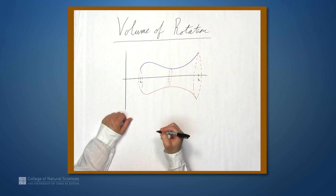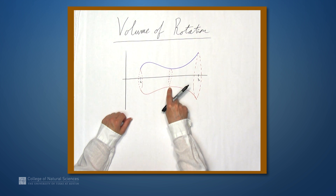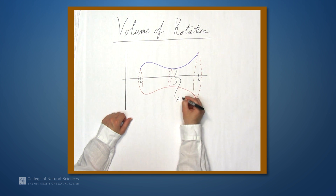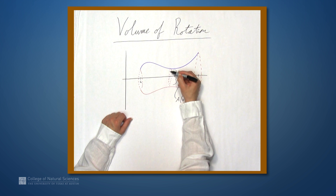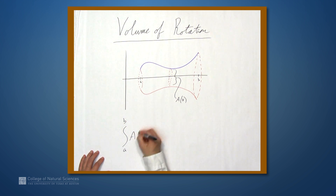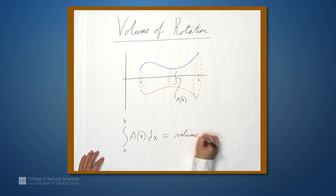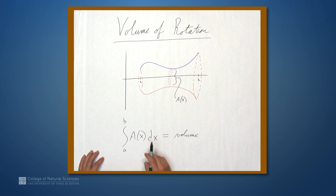So we want to figure out what the volume of this object is, and we're going to do this by integrating. We're going to integrate the area of a cross-section from a to b. We can call this area A(x), where x is determining the height of the function. So if we integrate A(x) dx from a to b, we get the volume. Integrating area from a to b gives us volume. So let's look at an example.